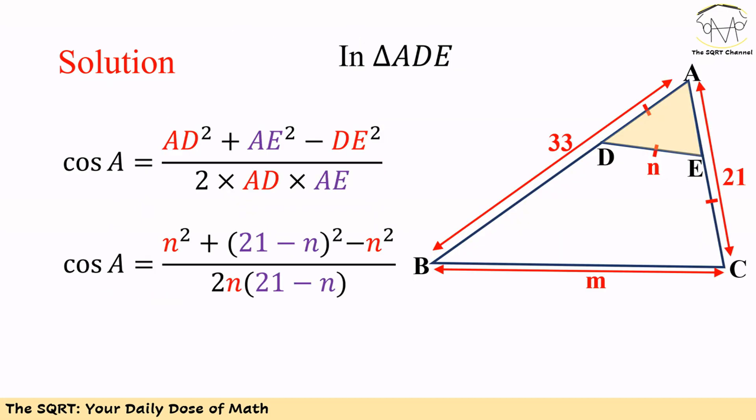Now let's start with triangle ADE. In triangle ADE we have angle A, and we can write cosine of A as AD² plus AE² minus DE² over 2 times AD times AE. We know AD is equal to N, we know DE is equal to N, and we know AE is equal to 21 minus EC, which is 21 minus N.